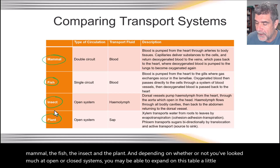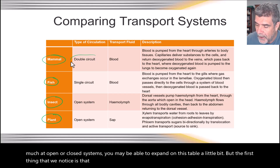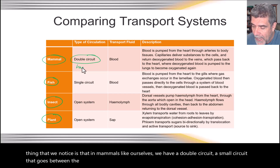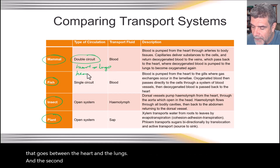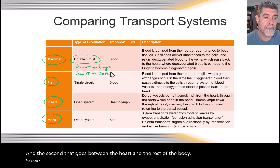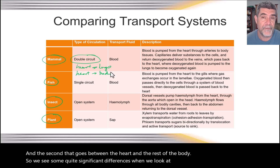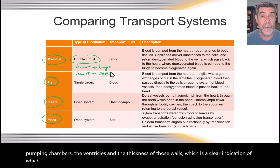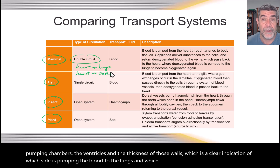The first thing we notice is that in mammals, like ourselves, we have a double circuit — a small circuit that goes between the heart and the lungs, and a second that goes between the heart and the rest of the body. We see significant differences when we look at the structure of the heart and the pumping chambers, the ventricles, and the thickness of those walls, which clearly indicates which side is pumping blood to the lungs and which is pumping blood to the head and the rest of the body.